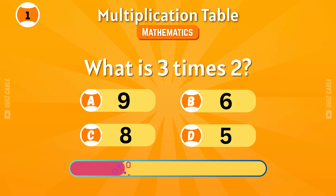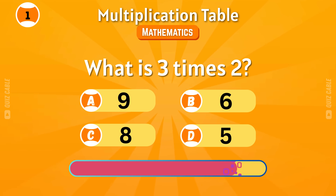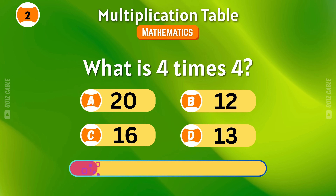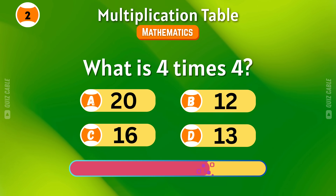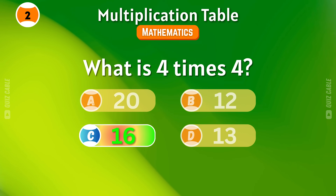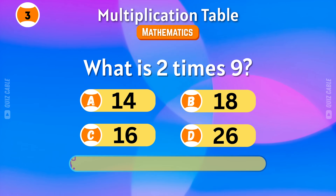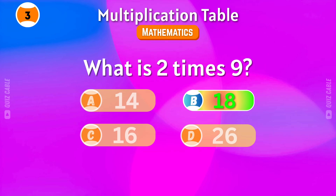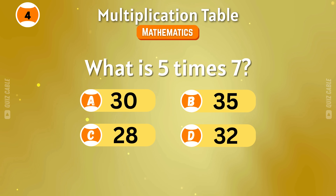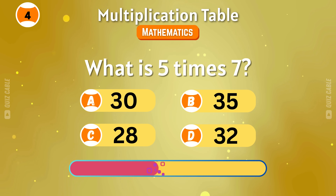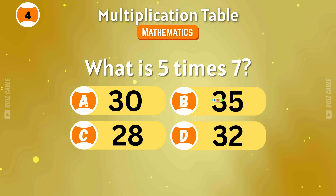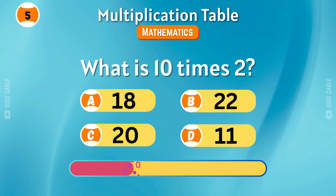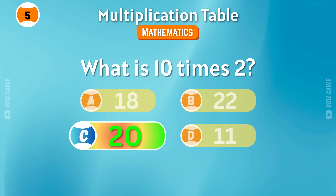What is 3 times 2? 6. What is 4 times 4? 16. What is 2 times 9? 18. What is 5 times 7? 35. What is 10 times 2? 20.